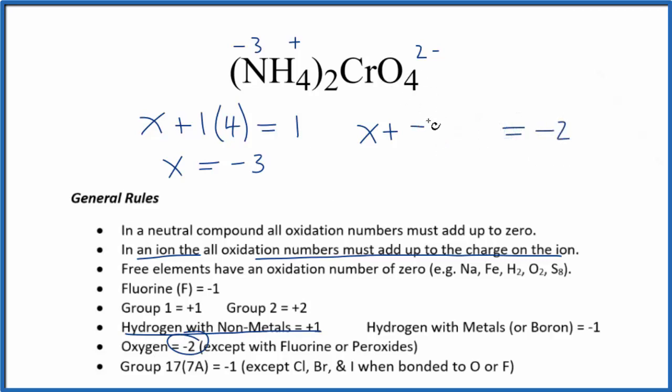So let's give ourselves some room. We'll have minus two times the four since we have four oxygens. X minus eight equals minus two. Add eight to both sides. X is going to equal a positive six. So the oxidation number on the chromium in the chromate ion here is plus six.